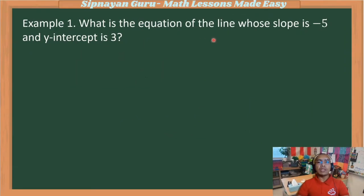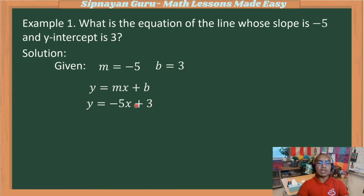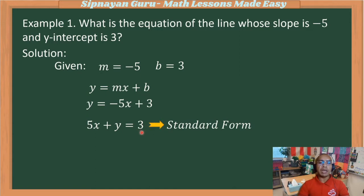Example 1: What is the equation of the line whose slope is negative 5 and y-intercept is 3? The slope is negative 5 and the y-intercept is positive 3. Substituting into y equals mx plus b gives y equals negative 5x plus 3. Transposing negative 5x to the left side gives positive 5x plus y equals 3, which is standard form. In general form: 5x plus y minus 3 equals 0.